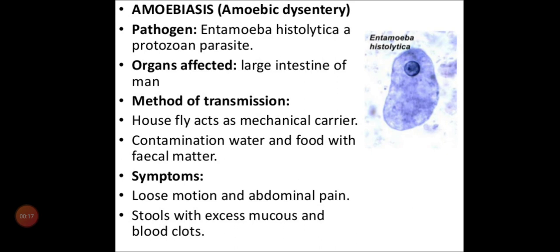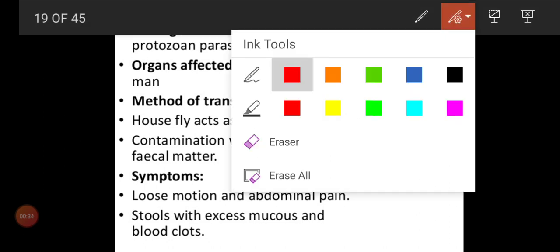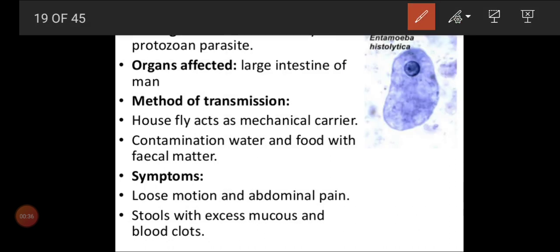And second, what we are going to learn now is amoebiasis, amebic dysentery. It also comes under the protozoa group. The name of the pathogen is Entamoeba histolytica. This is a protozoan parasite.